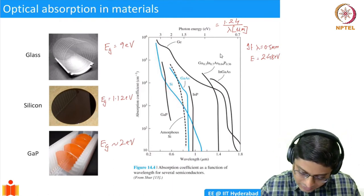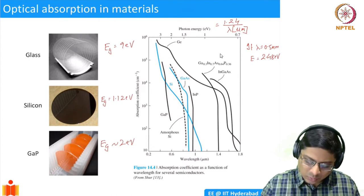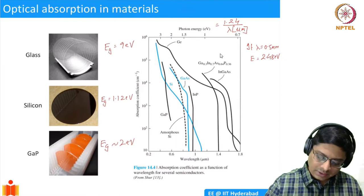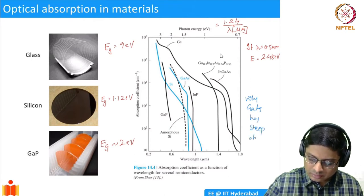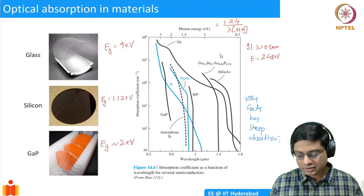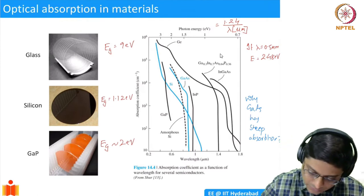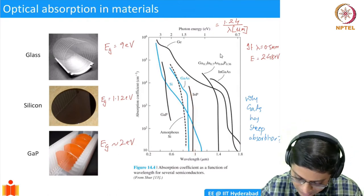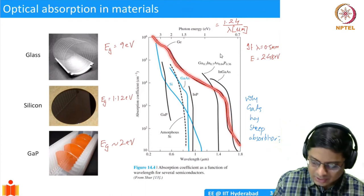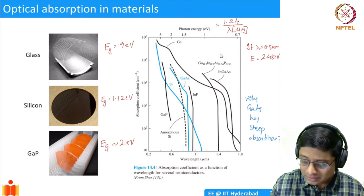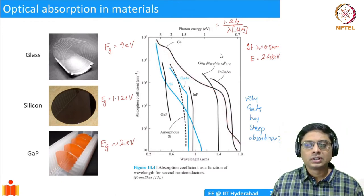Gallium arsenide shows a very steep increase in absorption just below the band gap wavelength, and continues to increase at shorter wavelengths. Indium phosphide similarly has steep absorption. Germanium, with a band gap of only about 0.8 eV, starts absorbing even at longer wavelengths and has a more gradual change.